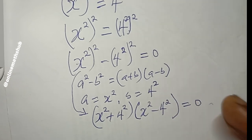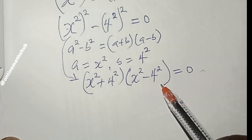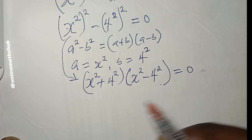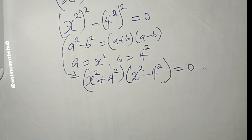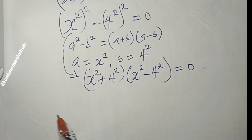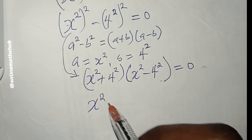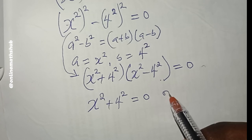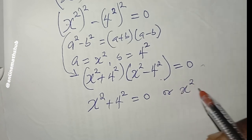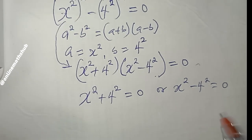Since this product equals zero, we apply the zero product property, which states that when the product of two terms equals zero, either one or all of the terms must equal zero. So this implies that either x squared plus 4 squared equals zero, or x squared minus 4 squared equals zero.